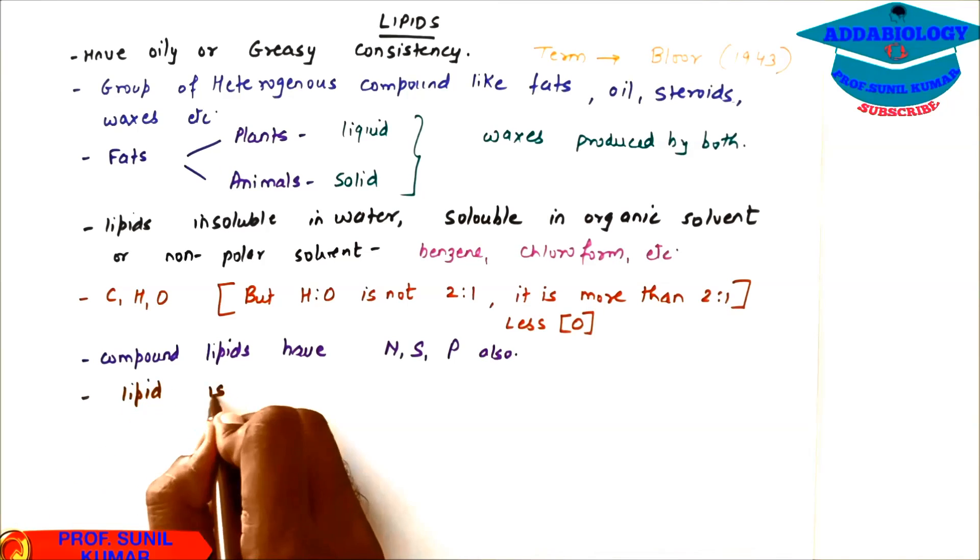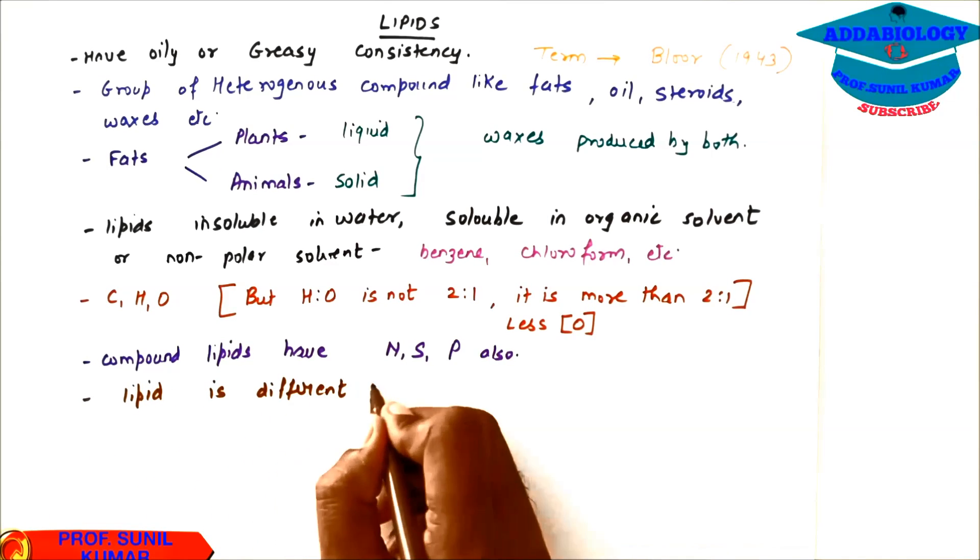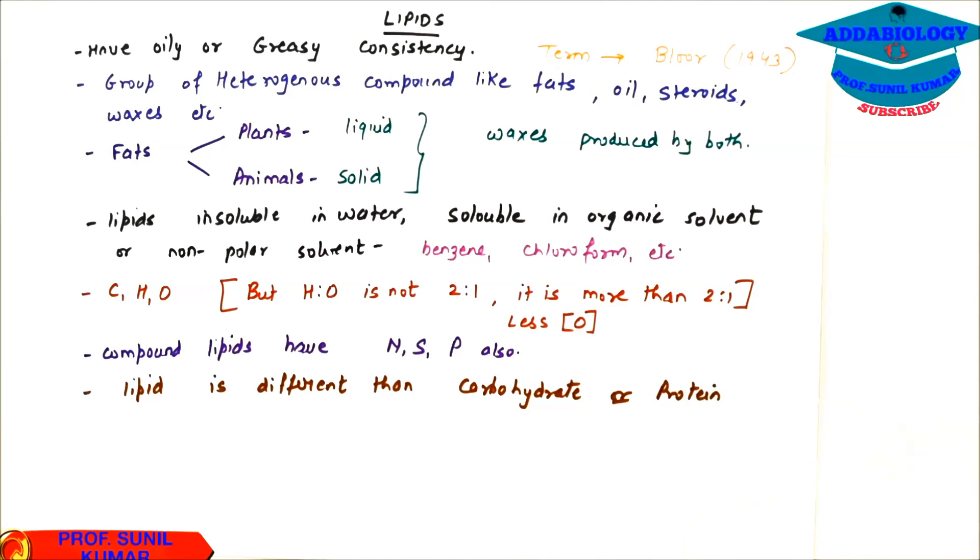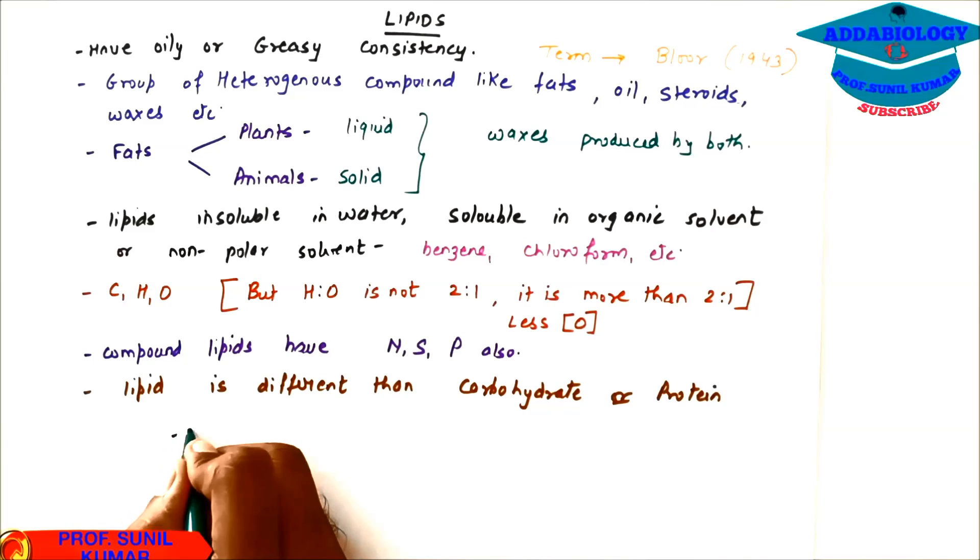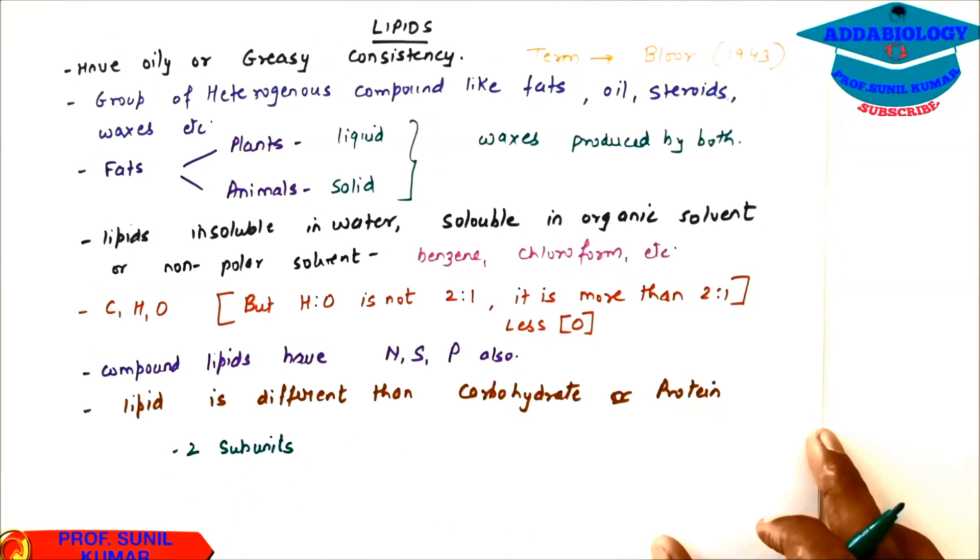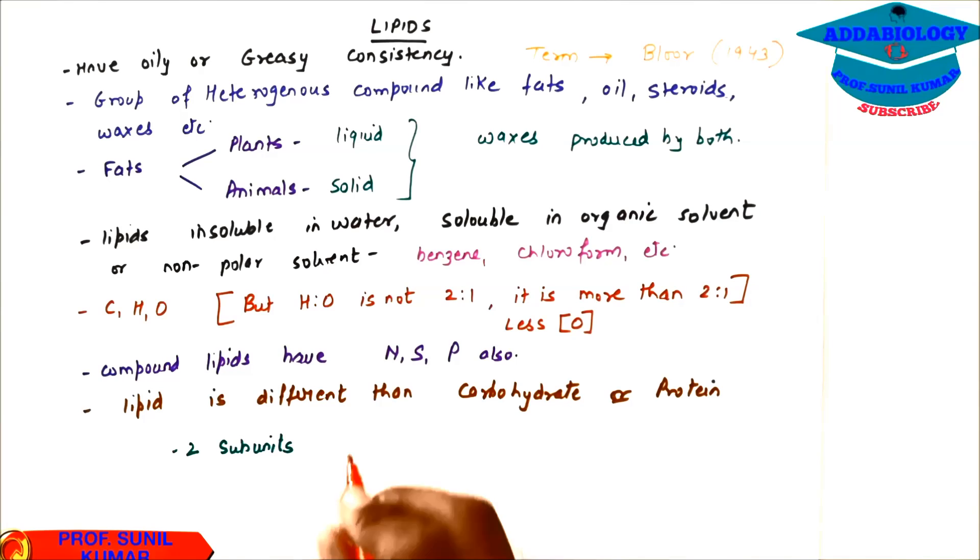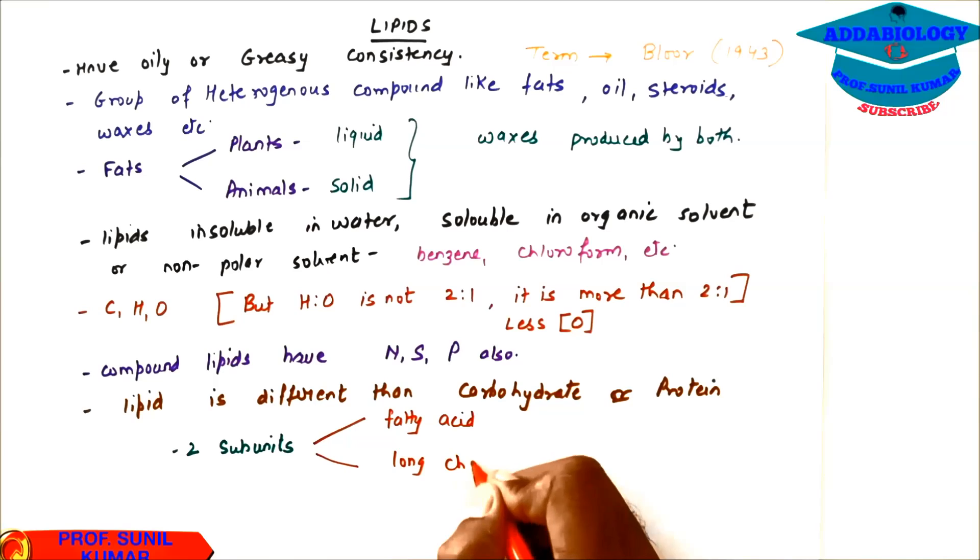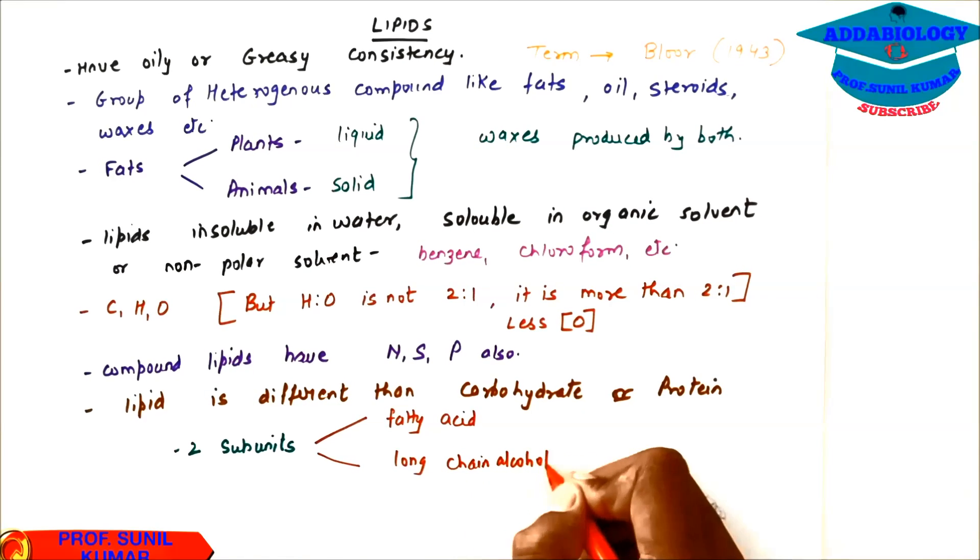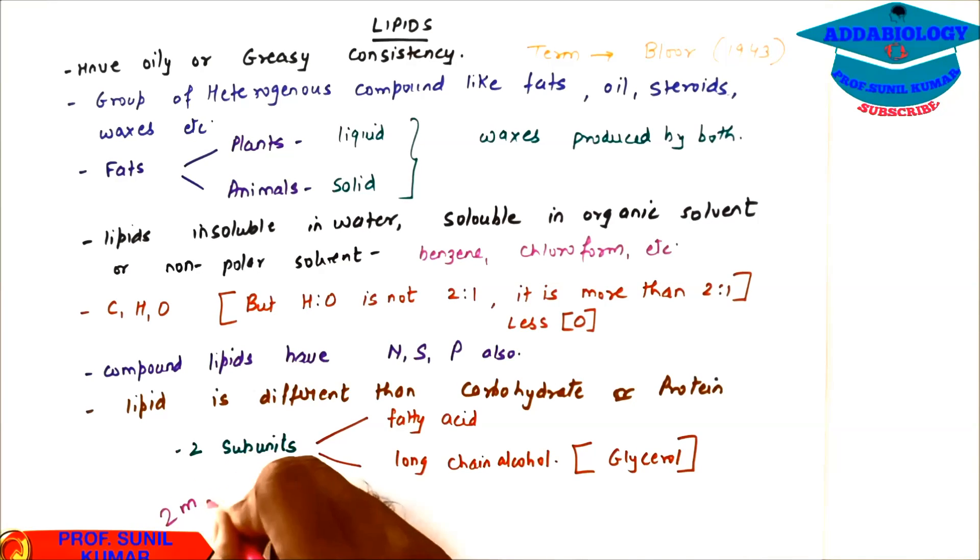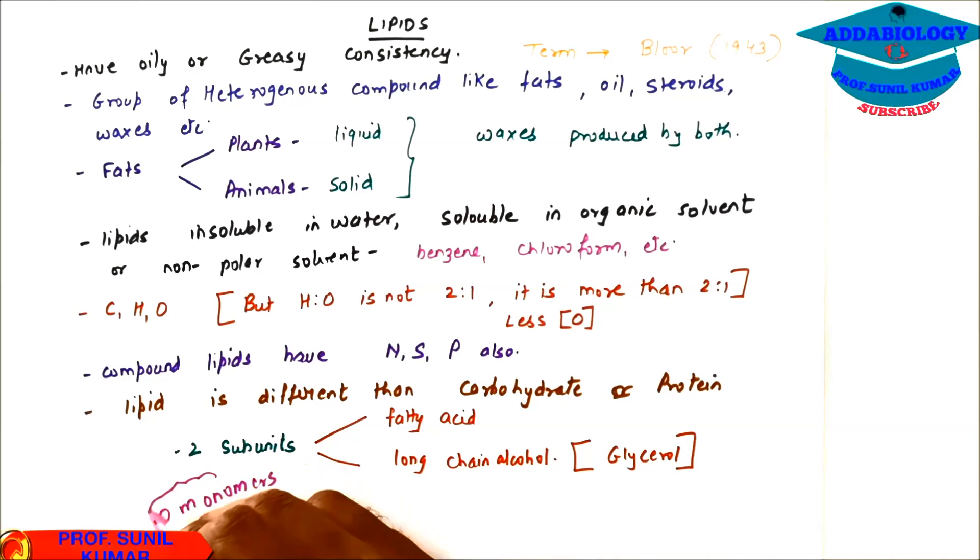Lipids are different than carbohydrate or protein because carbohydrates and proteins have single unit monomers, but in case of lipids they have two subunits. They are made up of fatty acid and long chain alcohol, i.e., glycerol. So in case of lipids we need to understand that they have two monomers. Lipids are different from carbohydrates and proteins in terms of their units.